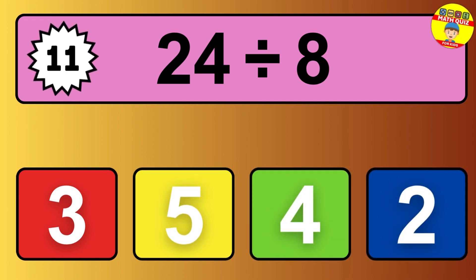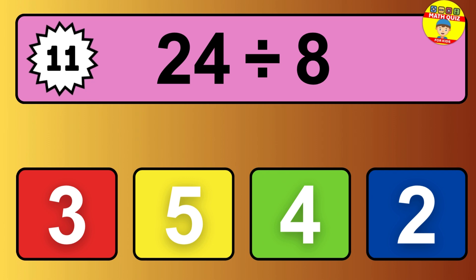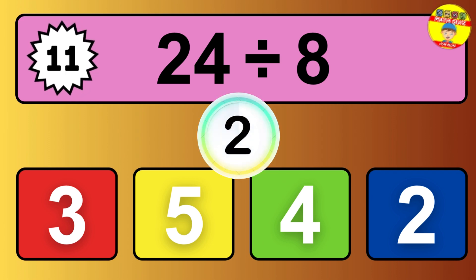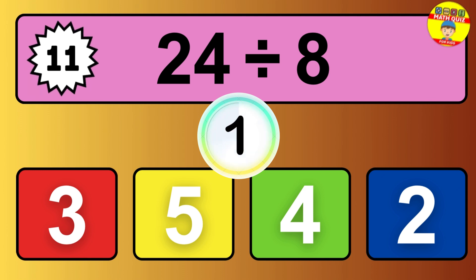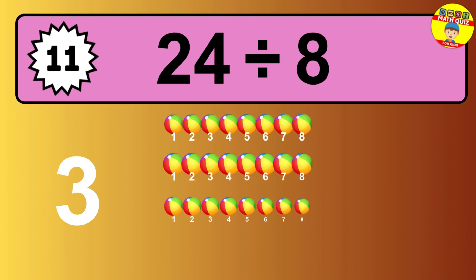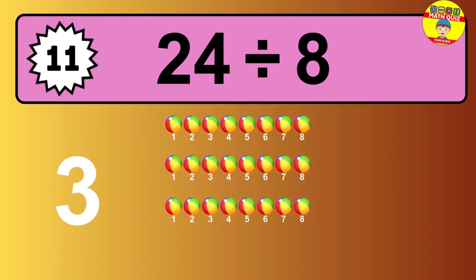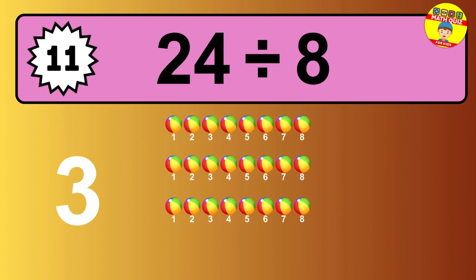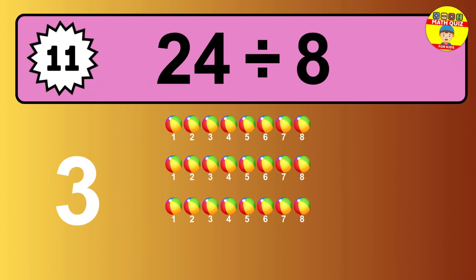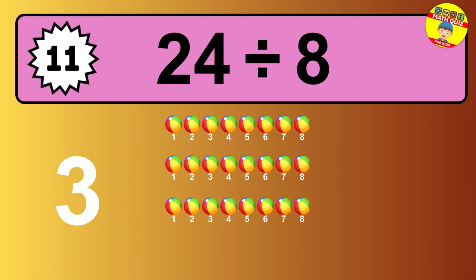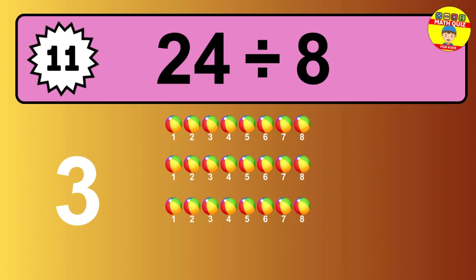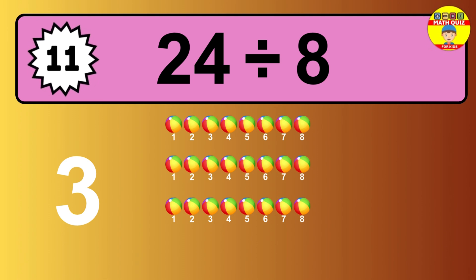24 divided by 8 — time to think. Let's go to the solution. Divide the number 24 by 8. Each group contains 8 units, so dividing 24 by 8 results in 3 equal groups. Thus, the result is 24 divided by 8 equals 3.